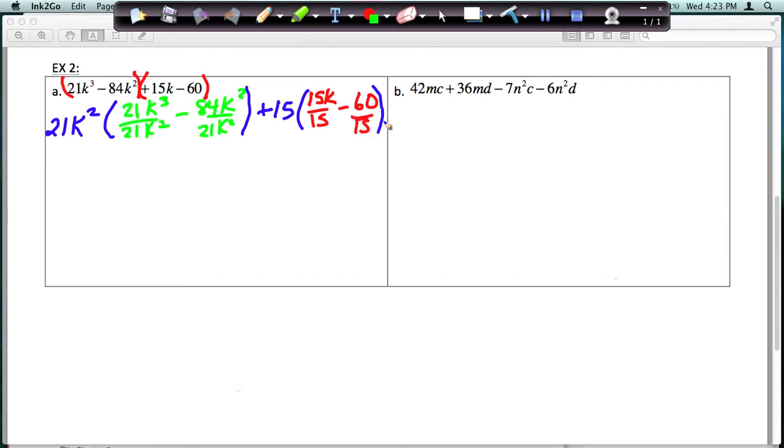So now we're going to simplify, and I'm going to have 21k squared. Here, the 21s cancel, and k cubed divided by k squared is just k, minus 84 divided by 21 is 4, and the k squared cancel. Plus 15. Here, the 15s cancel. I'm left with k minus 60 divided by 15 is 4.